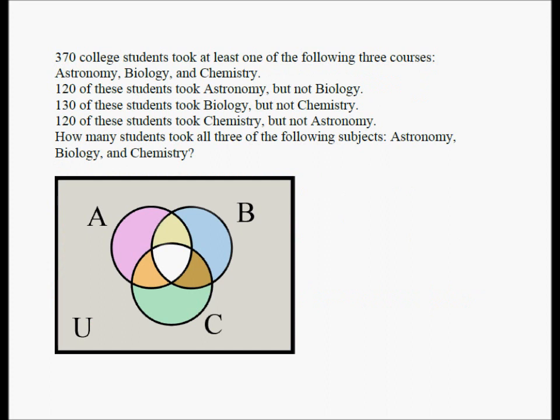So here's the same question in smaller font. I have a Venn diagram here involving three sets A, B, and C. A represents astronomy, B represents biology, C represents chemistry, and U is the universal set of all the students, all the 370 students.